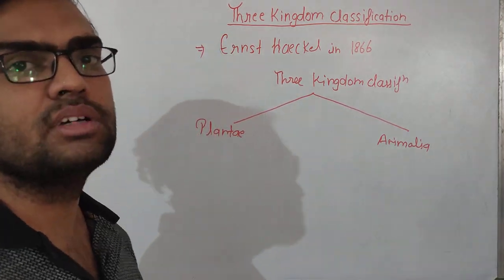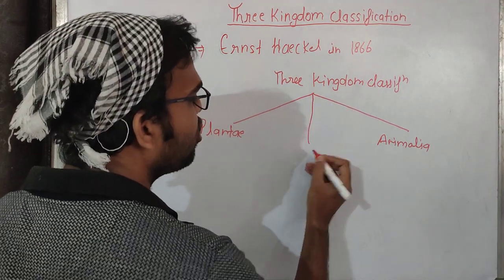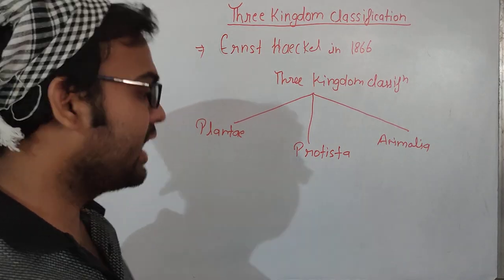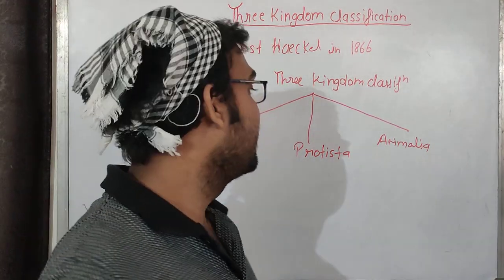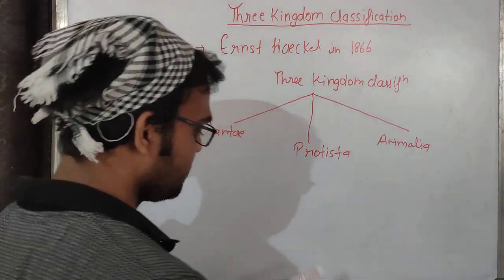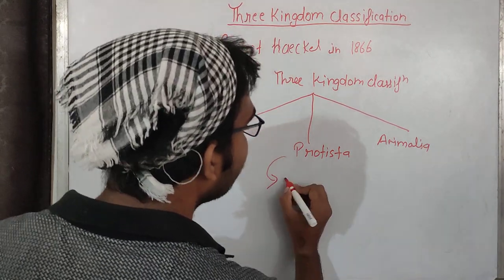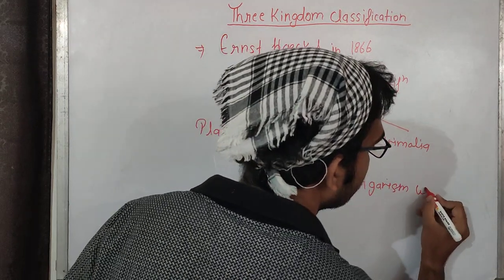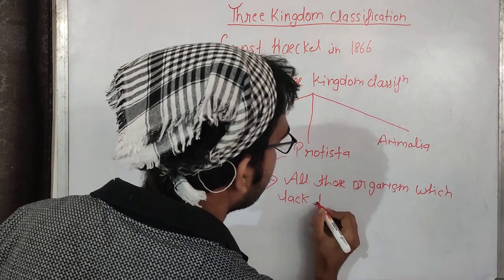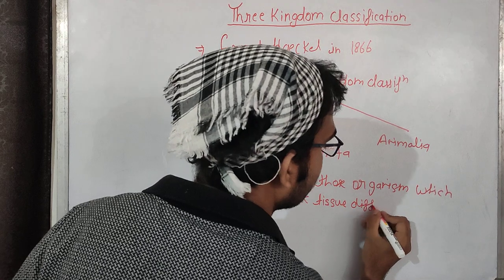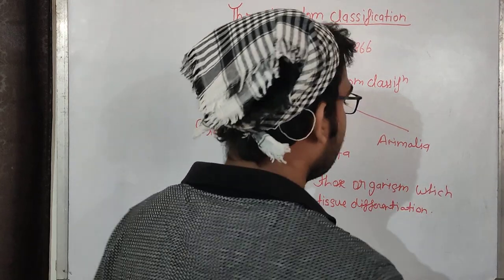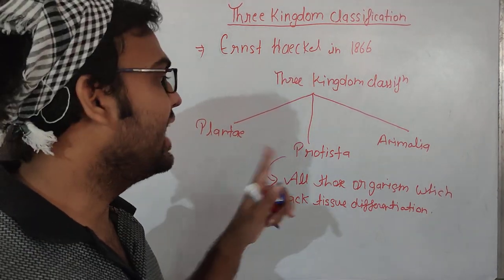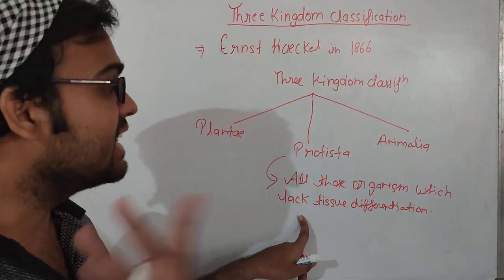In Linnaeus's system there was no place for unicellular organisms. So what Haeckel did is he introduced one more kingdom or group called Protista. The criteria was that he placed all those organisms which lack tissue differentiation.